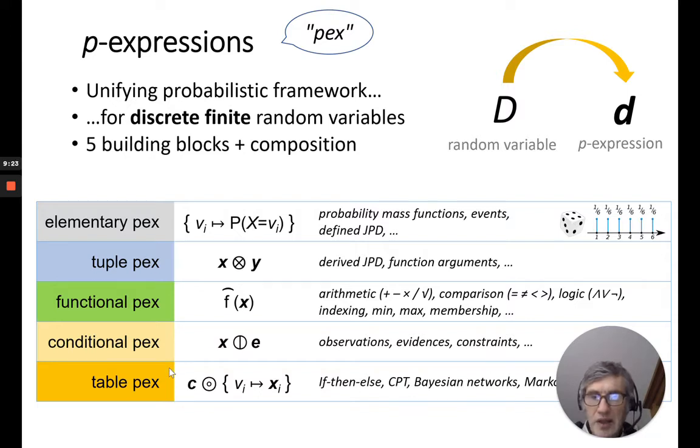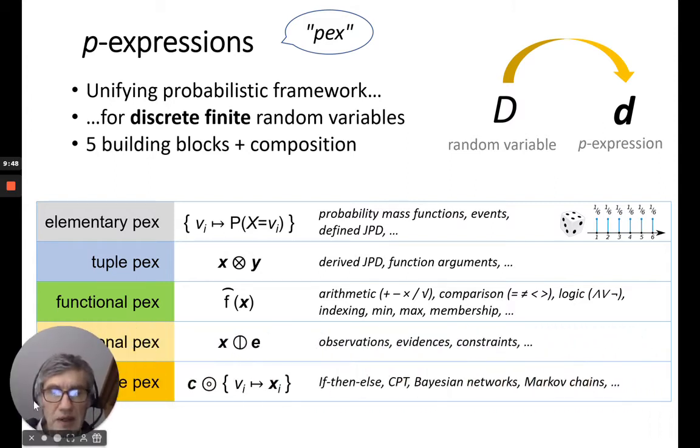The last one is the table PEX. It's basically an association of a value of a given PEX with other PEX. So, each value is associated to a specific PEX, and it's used to model an if-then-else or a CPT. And as you probably expect, you can do also Bayesian networks and Markov chains with that.